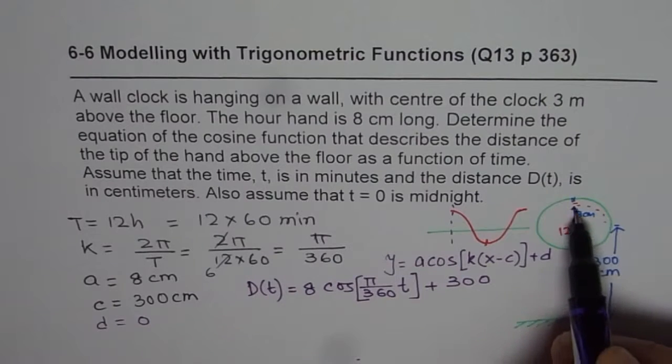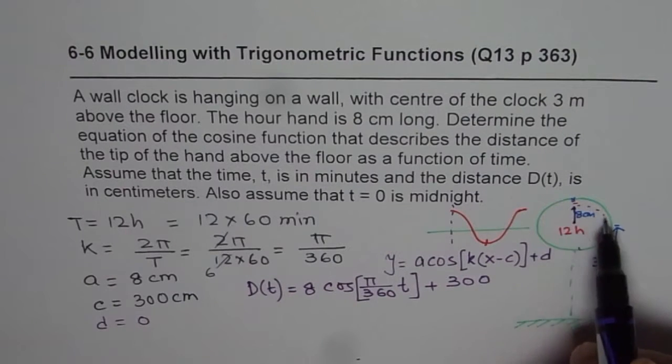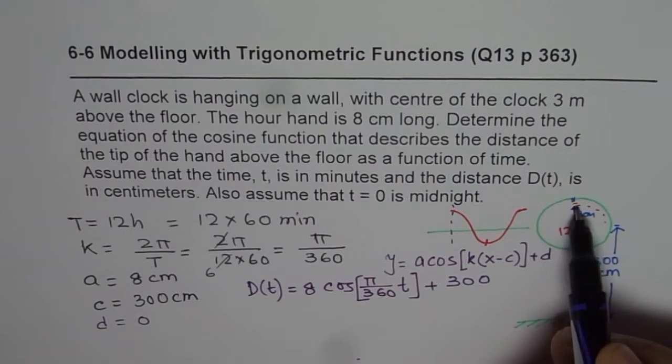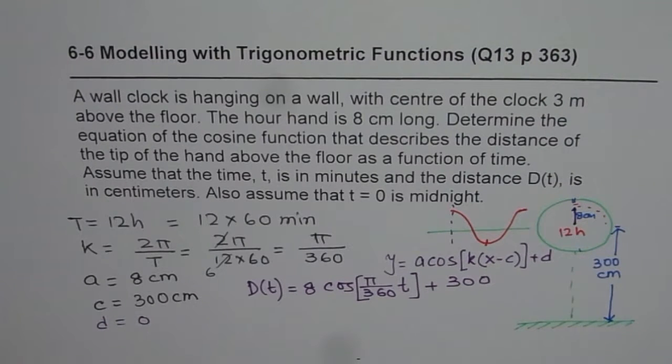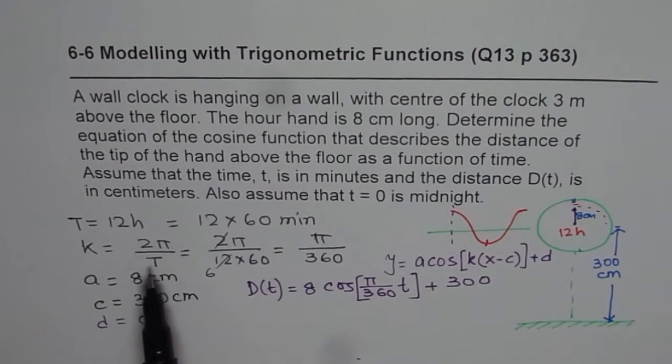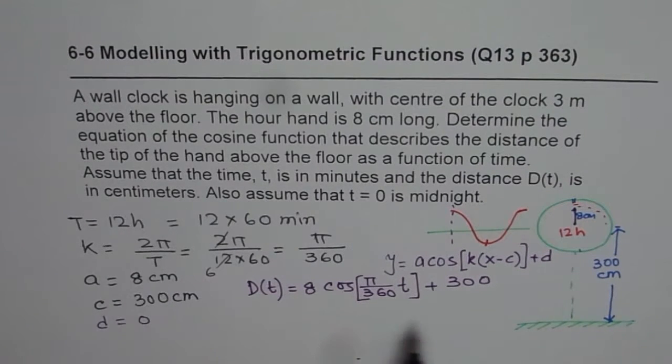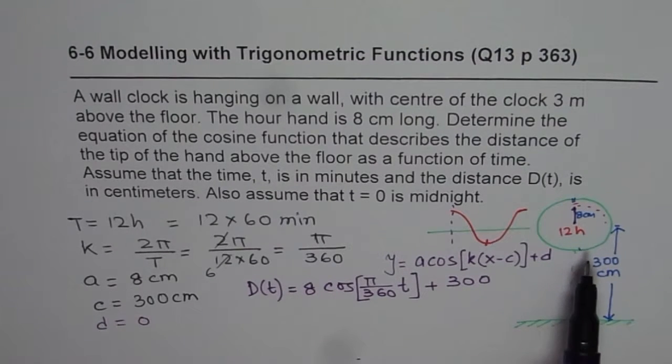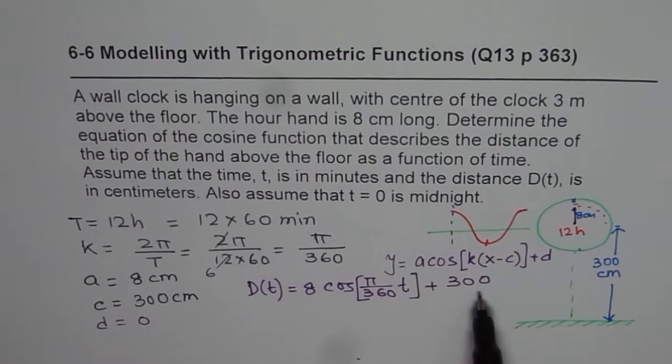So a second will go in one minute, 60 seconds. A minute will take 60 minutes to go through it. So you have to change the value of k, which will be 2π by the time period. But the steps are going to be exactly same. So I'll recommend that you go through that exercise yourself and write down your equation. I hope this explanation helps.